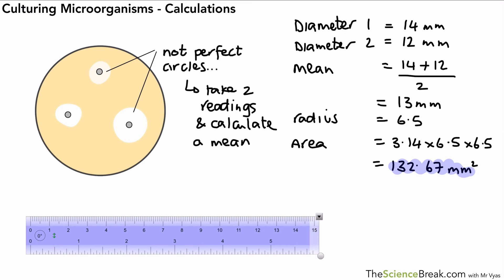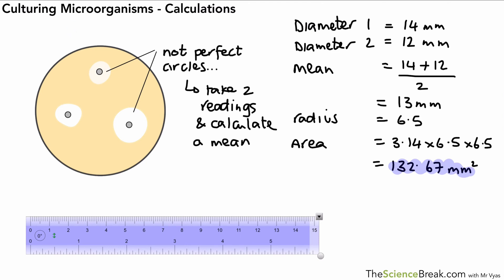So two calculations we can do regarding culturing microorganisms. It's probably worth having a look at what an exam question might look like. Here we have an exam question—you should pause and read it and give it a go yourself and see what you come up with. What we're trying to do is calculate how many times bigger the area of dead bacteria is for disinfectant A compared to disinfectant B. How many times bigger is area A compared to area B? We divide area A by area B.